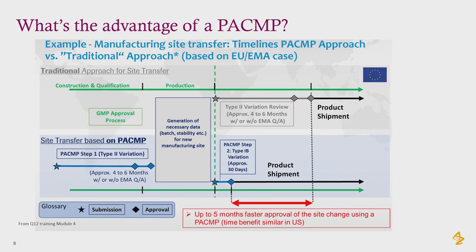How significant is that saving? There's a very illustrative cartoon from the Q12 training module four showing a side-by-side comparison of the traditional approach for a site transfer versus the PACMP approach. Looking at introduction of a new site, we have to go through a series of construction, qualification, and data generation steps. Traditionally, this all happens before we engage with the agency, and then there's usually an intensive review period before we can enable shipment. With a PACMP-based approach, we can start negotiating the strategy for that change with the agency before we actually generate any information.